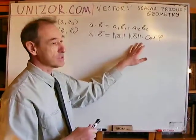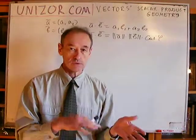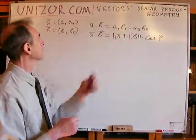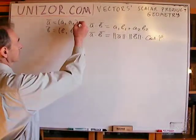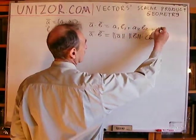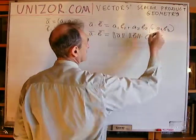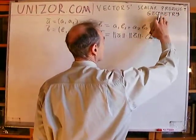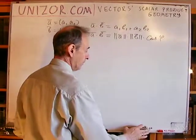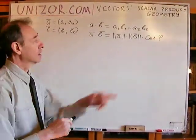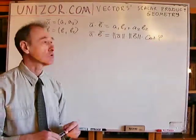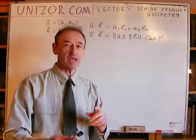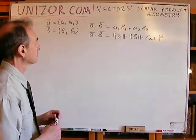I'm going to prove this result in two cases: the two-dimensional case and the three-dimensional case. In three dimensions there is a similar formula — if you add a third coordinate A3 and B3, the coordinate scalar product extends naturally. However, the geometric interpretation has a significant complication in three dimensions, so I will spend a little more time on that.